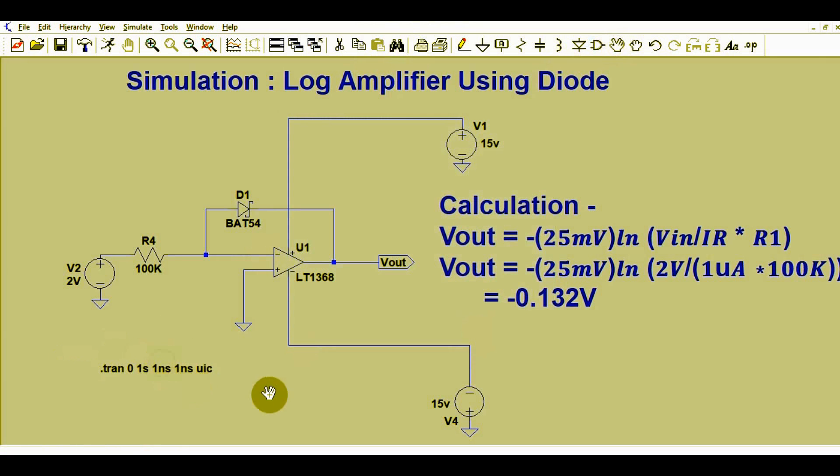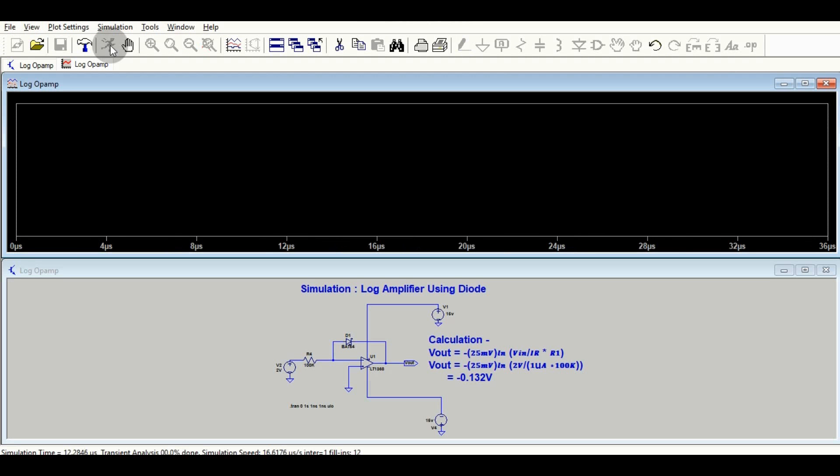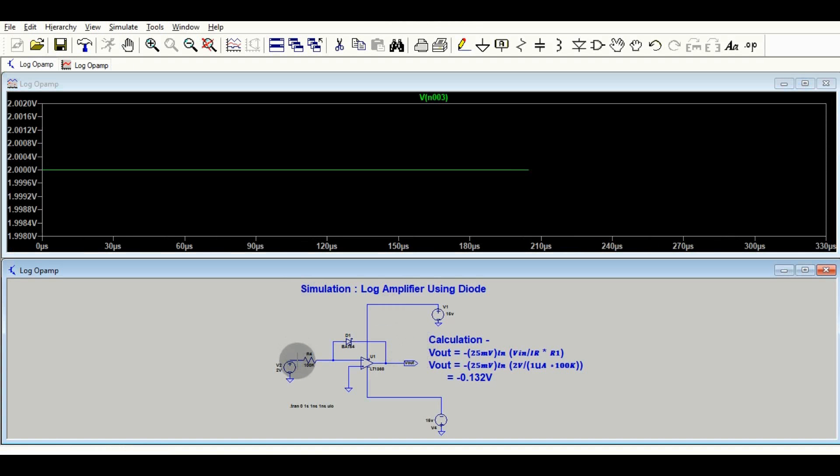Now you have to go here - this is the run button. If you want to look at the input voltage, this is the input voltage which is 2 volts. Now you want to check the output voltage.